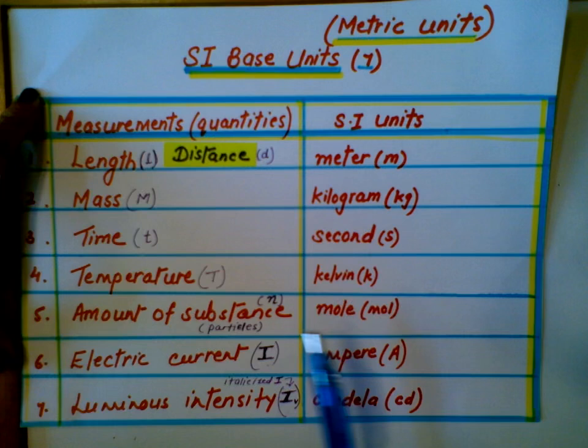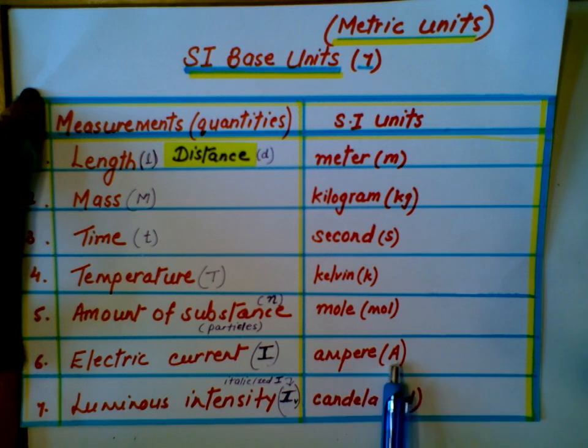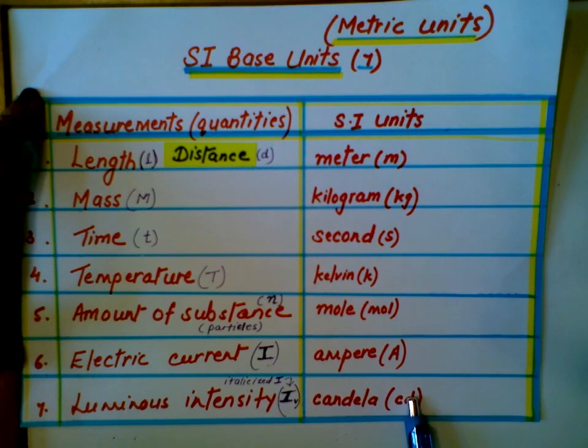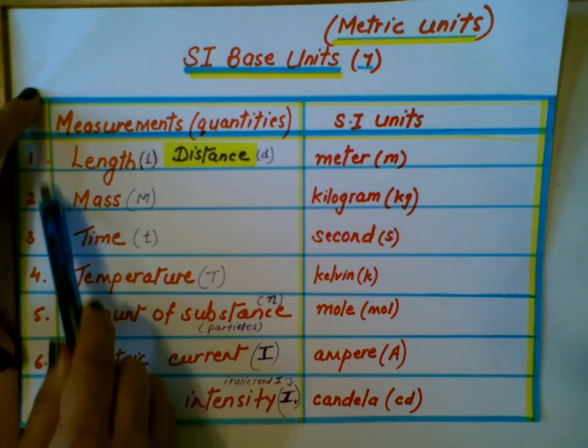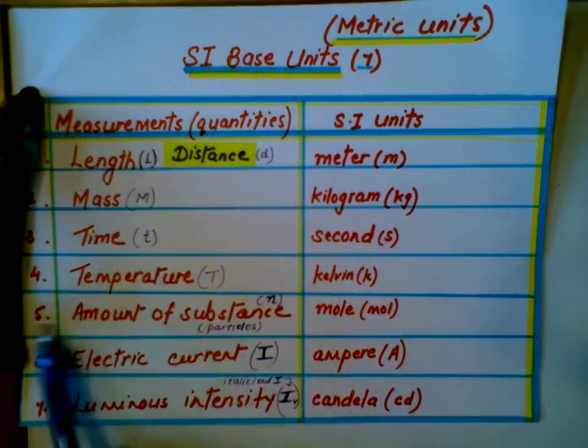Mole is the SI unit for amount of substance, or amount of particles. Electric current uses the SI unit ampere. Luminous intensity, which is actually brightness, is measured in candela. From one through five, these are the ones you will be using in chemistry.